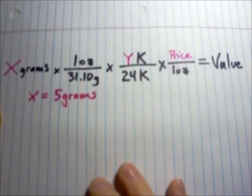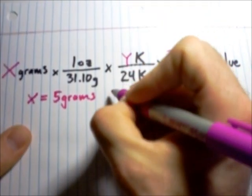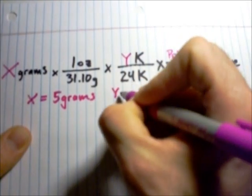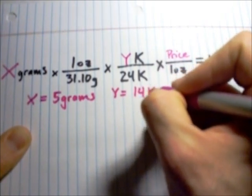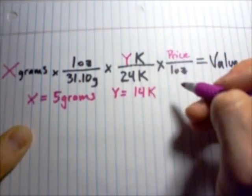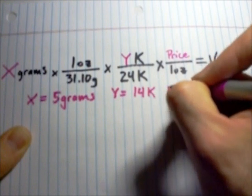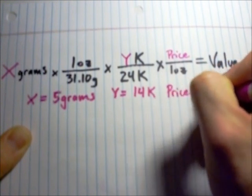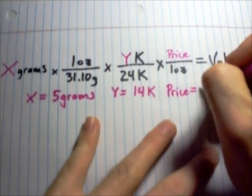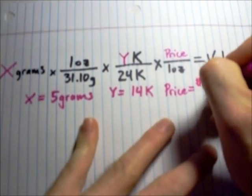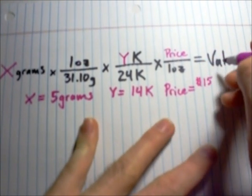All right. We will also say that our carats of our gold, y, we'll say it is 14 carat. And today's price, our spot price for gold per ounce, today it is 1573.